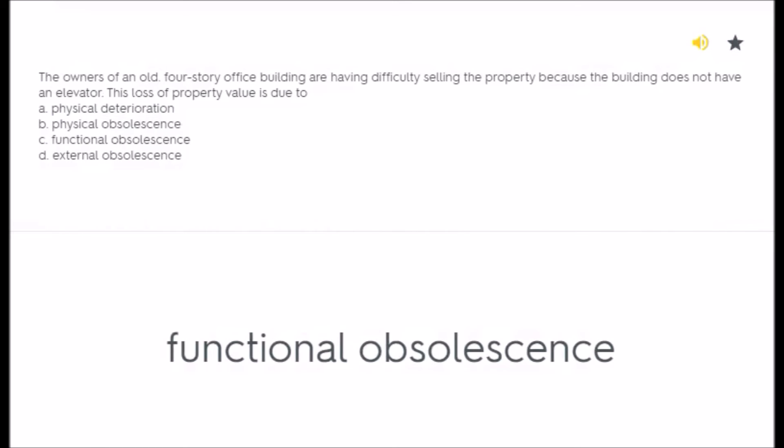The owners of an old four-story office building are having difficulty selling the property because the building does not have an elevator. This loss of property value is due to: A) physical deterioration, B) physical obsolescence, C) functional obsolescence, D) external obsolescence.